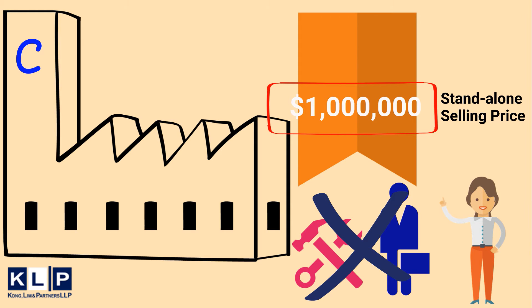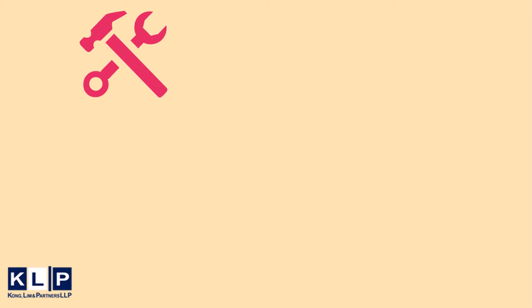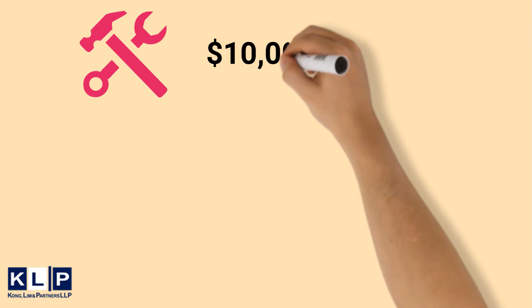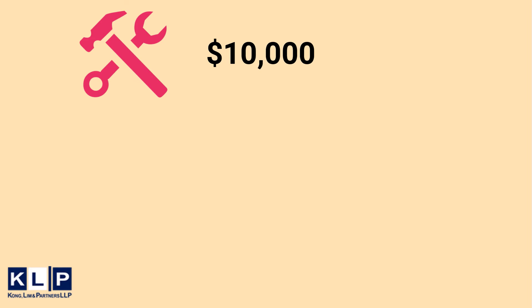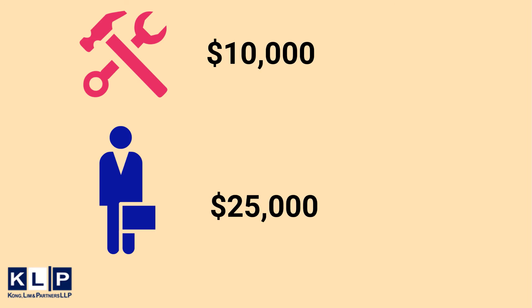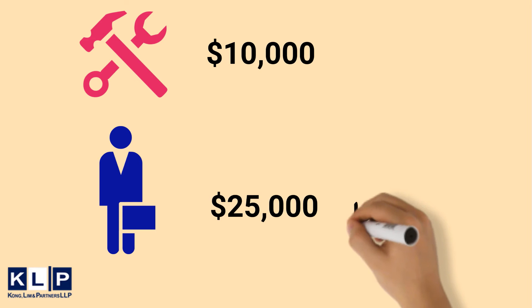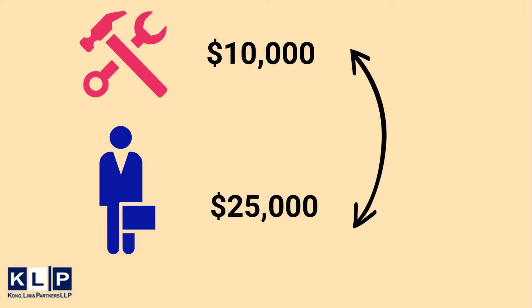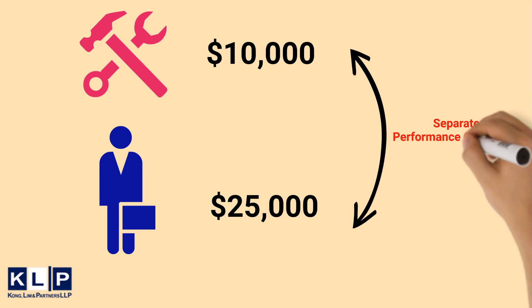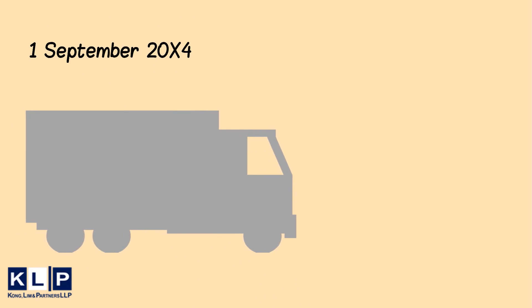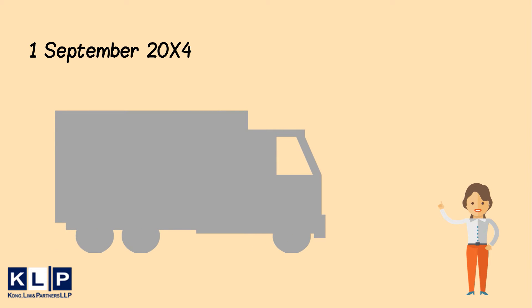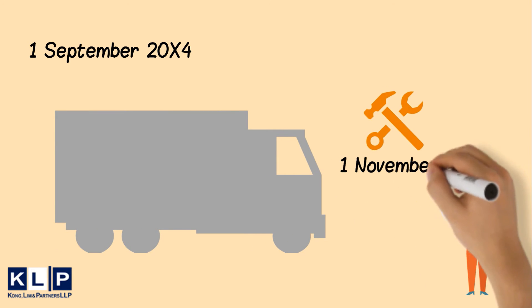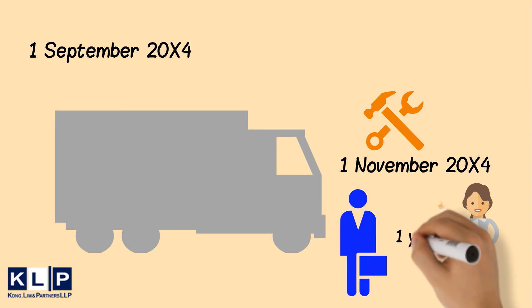Other companies can perform the installation and training services. The estimated fair value of the installation service is $10,000, while the estimated fair value of the training is $25,000. As we learnt in step 2, we can now determine that the installation and training services are separate performance obligations. On 1 September 20X4, the equipment was delivered to the customer. Installation was completed on 1 November, after which training commenced and will continue on a monthly basis for one year.